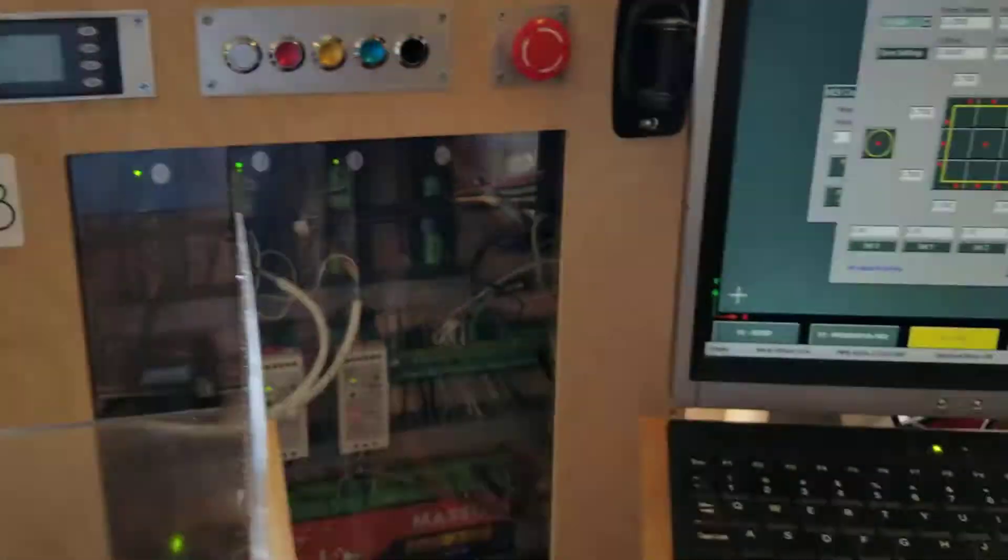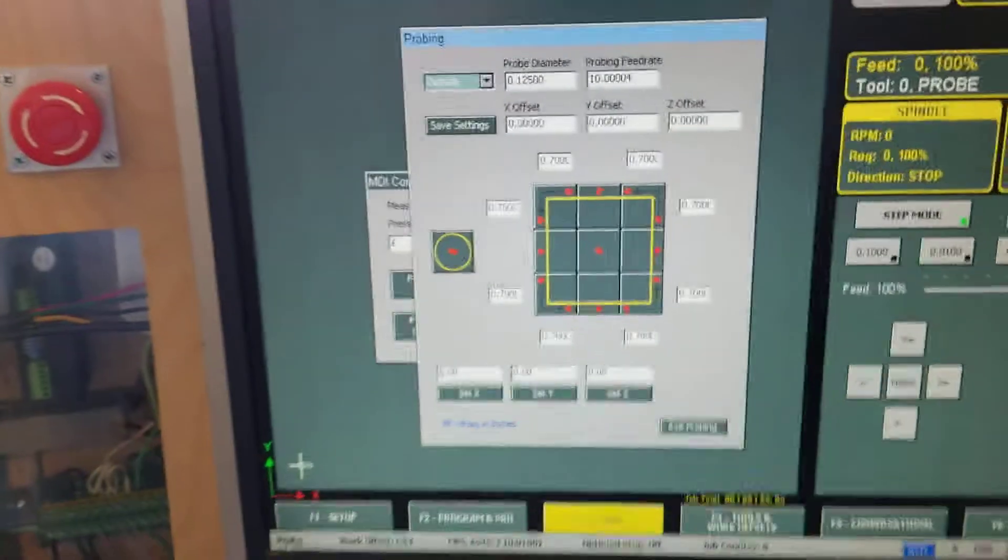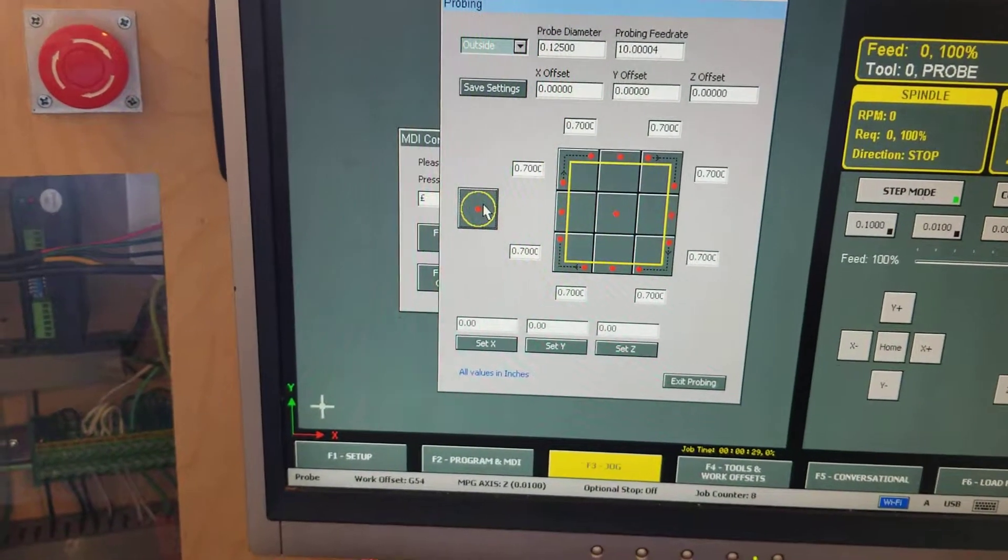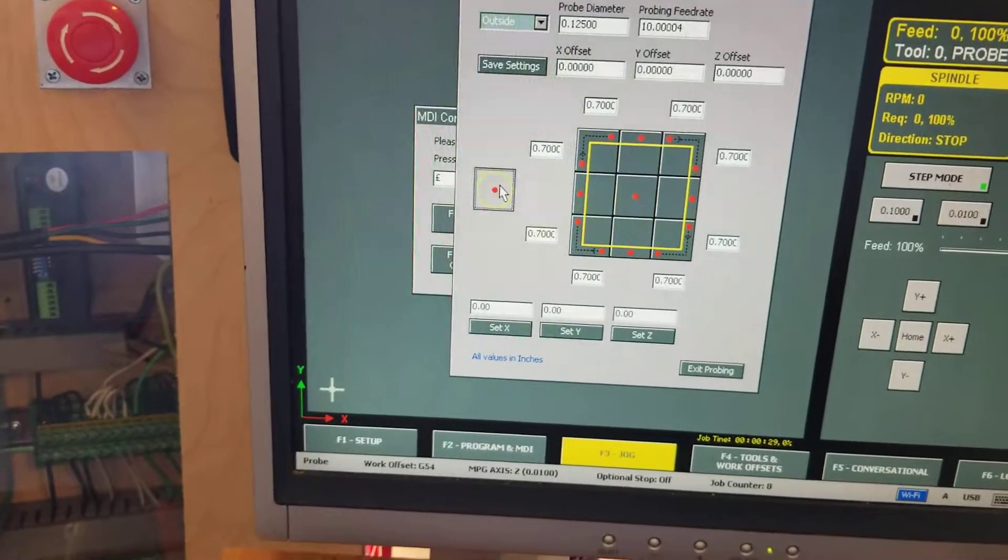We're just going to go ahead and press the find center hole function on the menu and Masso is going to go and find it.